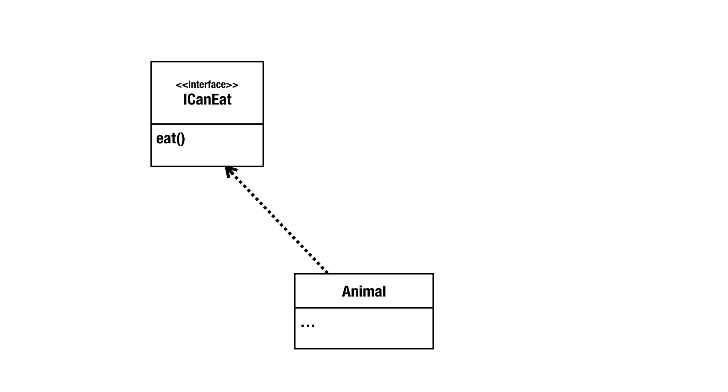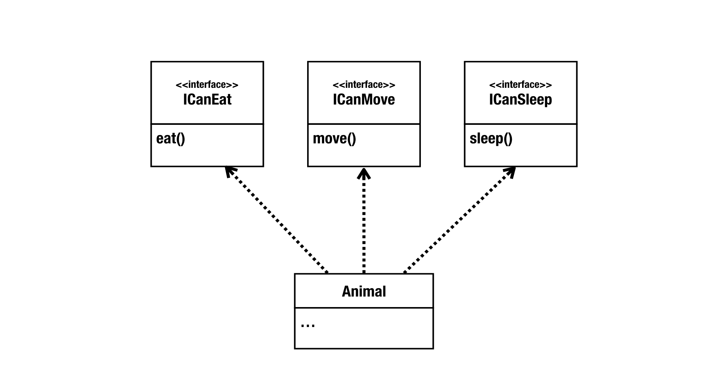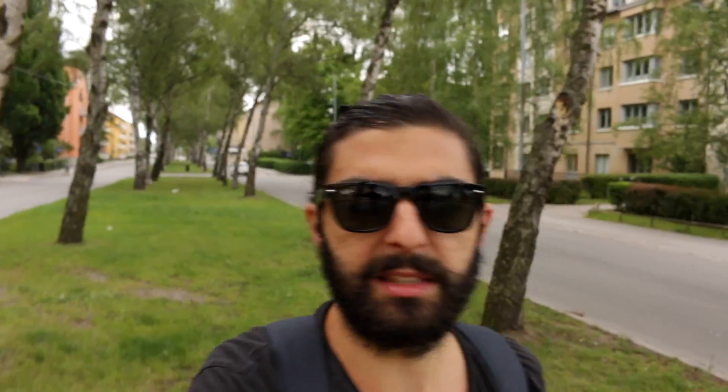An alternative would be to create one interface per method: a CanEat interface, a CanMove interface, and a CanSleep interface. That means an Animal doesn't necessarily implement an IAnimal interface, but rather any particular animal implements the interfaces CanMove, CanSleep, and CanEat.